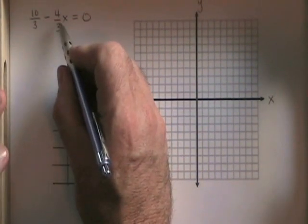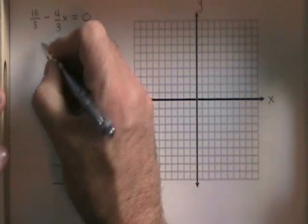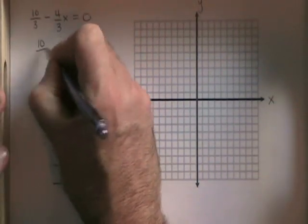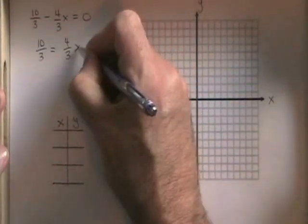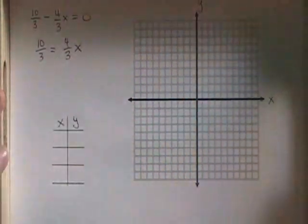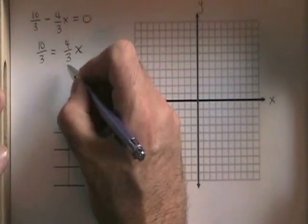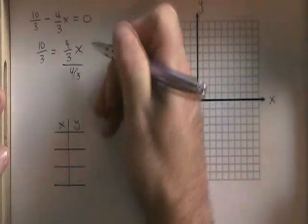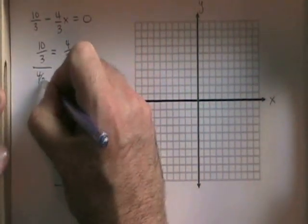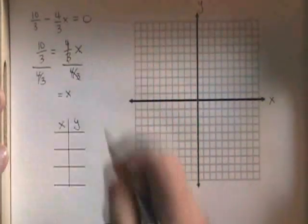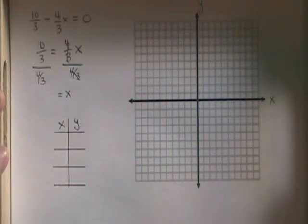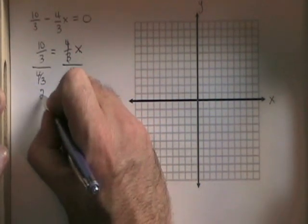I'm going to move the negative 4 thirds x to the other side, and I get 10 thirds equals 4 thirds x. Now, if I divide both sides by 4 thirds, these will cancel. My x is isolated. And 10 thirds divided by 4 thirds is 2 and a half.